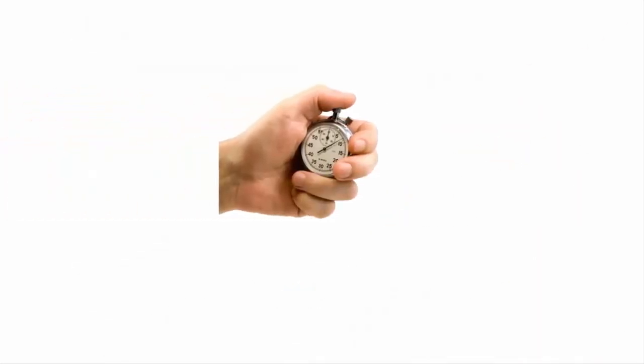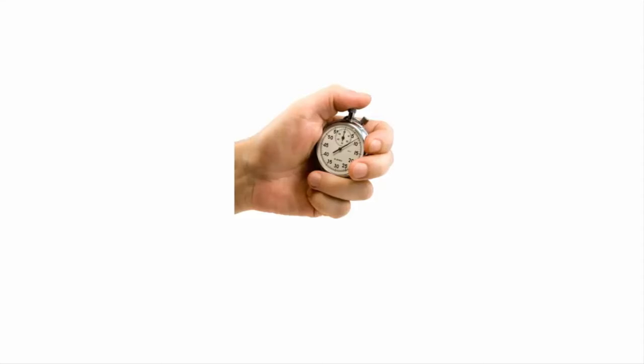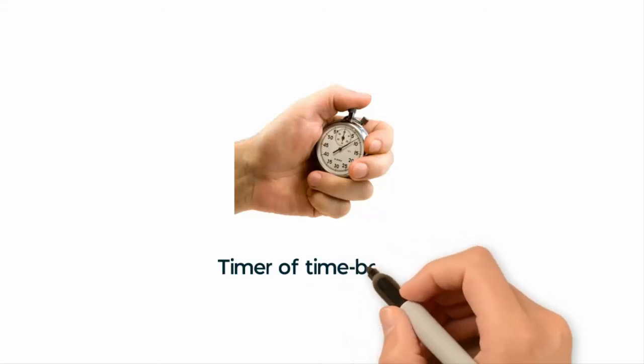The last point, timer for time box. The idea behind this point is to force action through a self-imposed deadline. The time limit will force people to quickly assess the pros and cons and come to a faster decision.